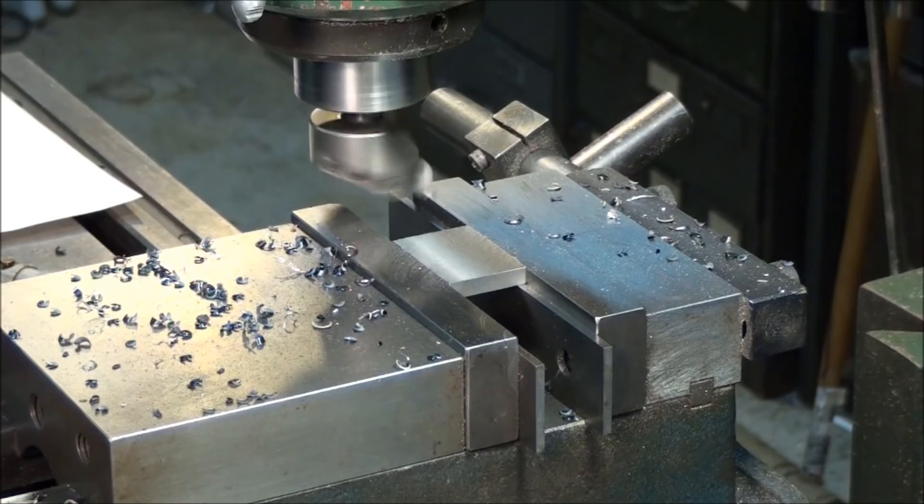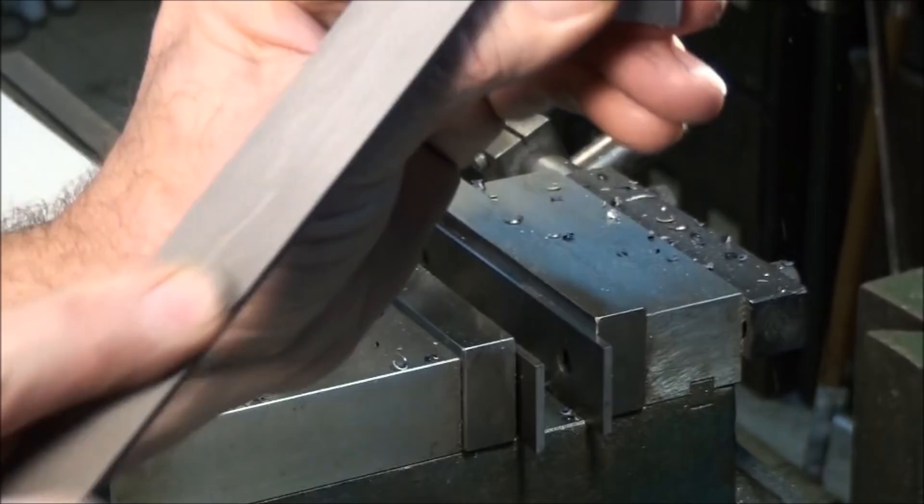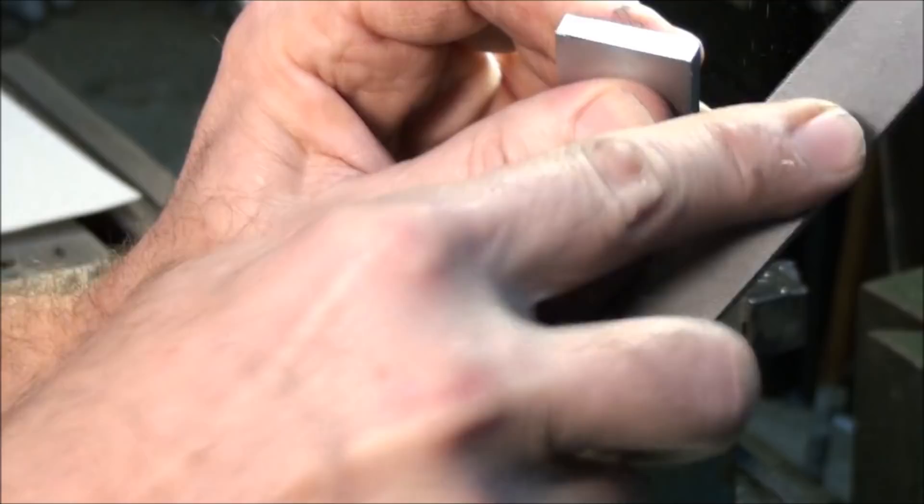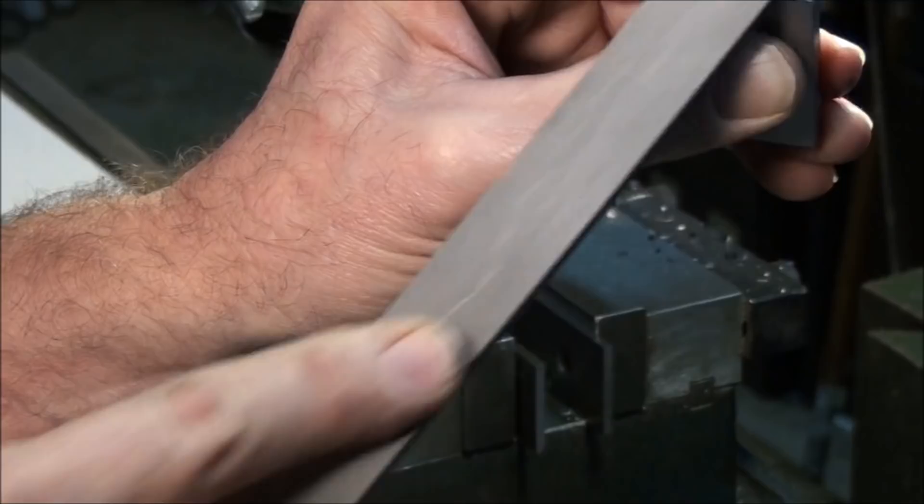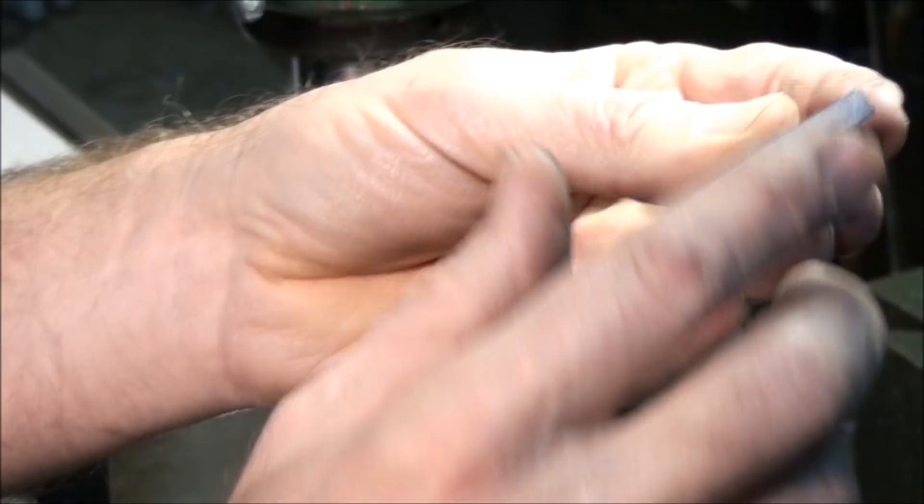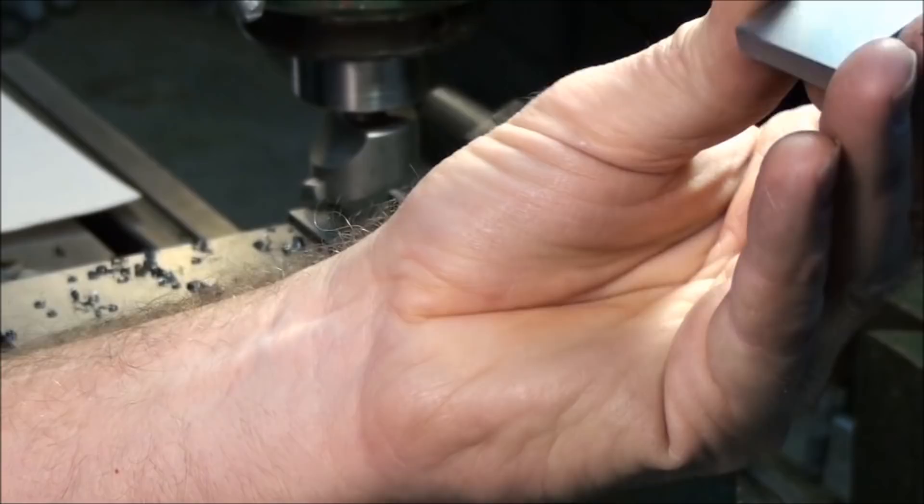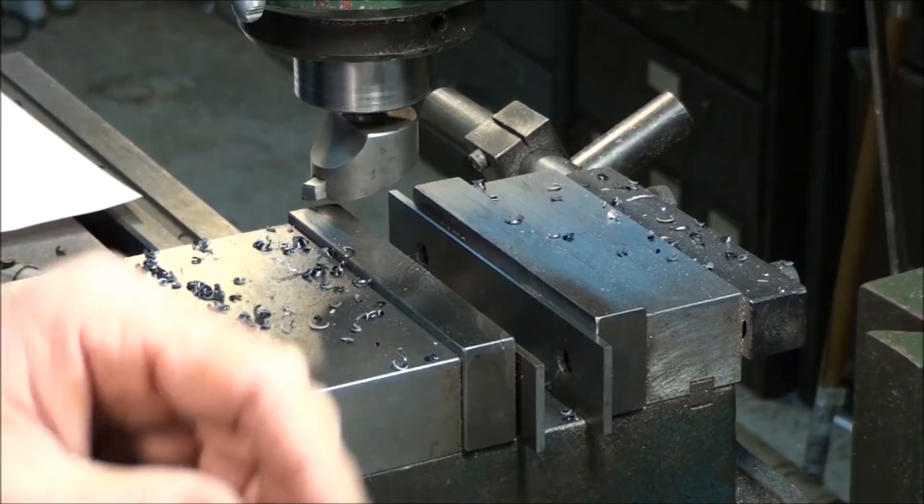That should finish up this part. Get all the burrs off of it. Then we'll set up and we can either drill the holes, drill and tap the holes next or we can mill the notch in it. Let's go ahead and mill the notch while we're milling. It's not going to make any difference in the order of operations. Alright, so that's the finished part squared up on all sides. Let me turn the camera off for a minute and get set up for the next operation.